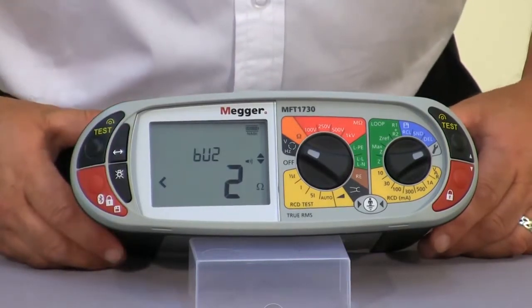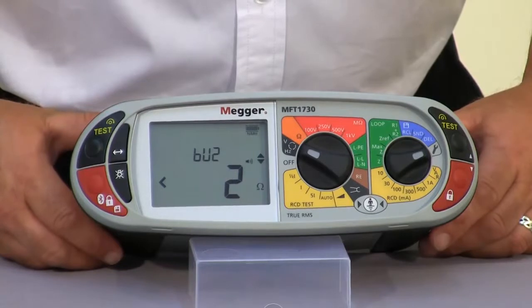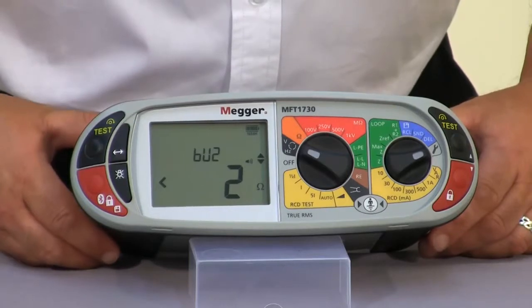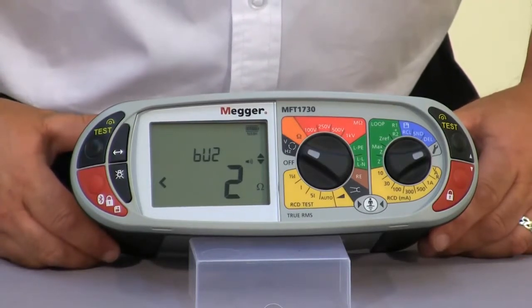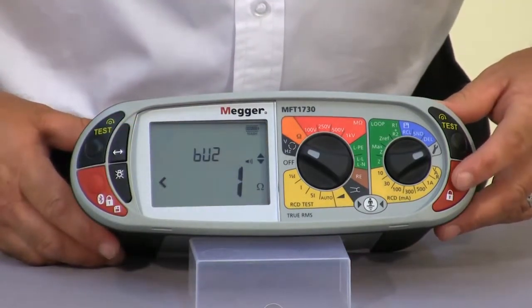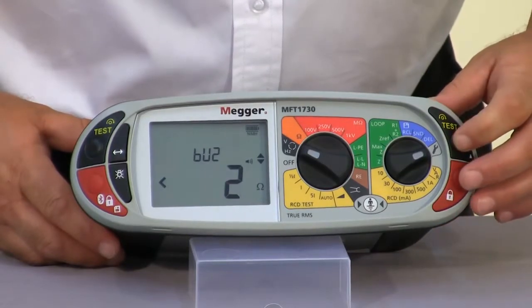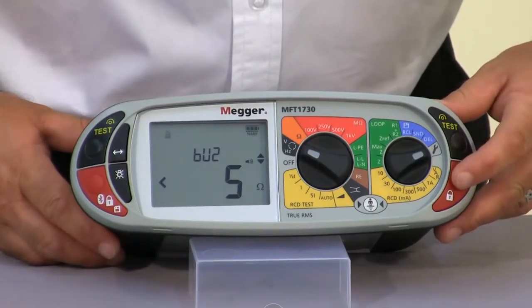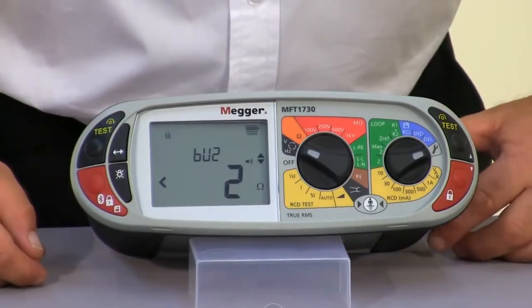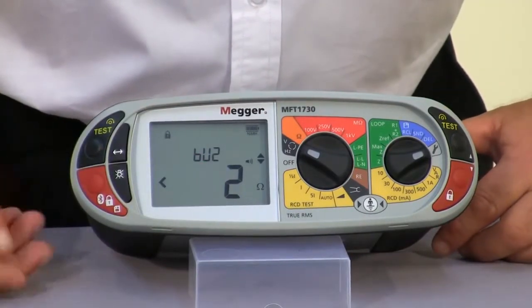Next, we have our continuity limit alarm. This is exactly the same principle, but what we're looking for is a reading of less than the preset value. At the moment we have two ohms, and we can go in and select it down to one ohm, or we can increase that value. But as soon as we get a reading below the preset value, the unit will indicate with an audible alarm.